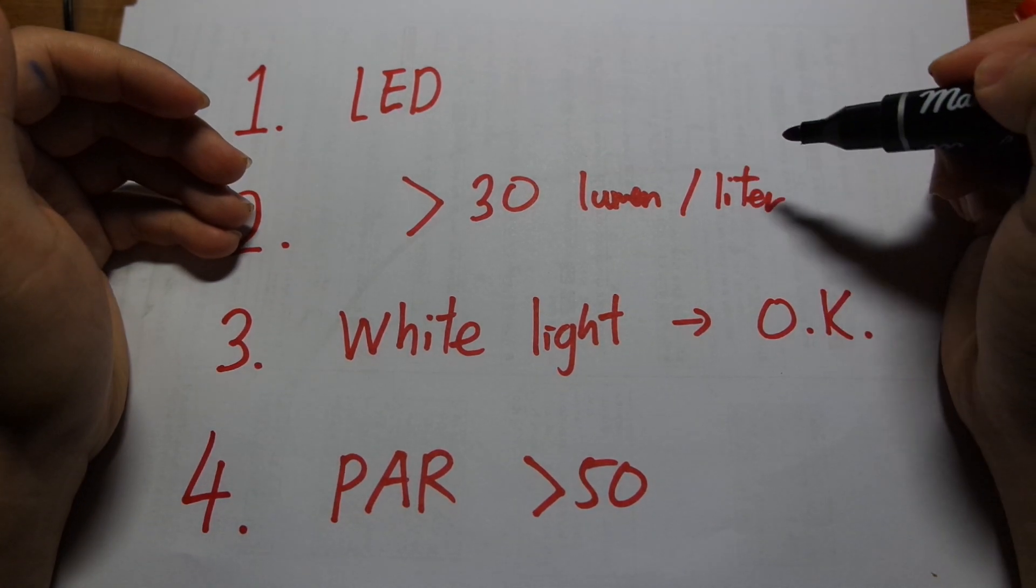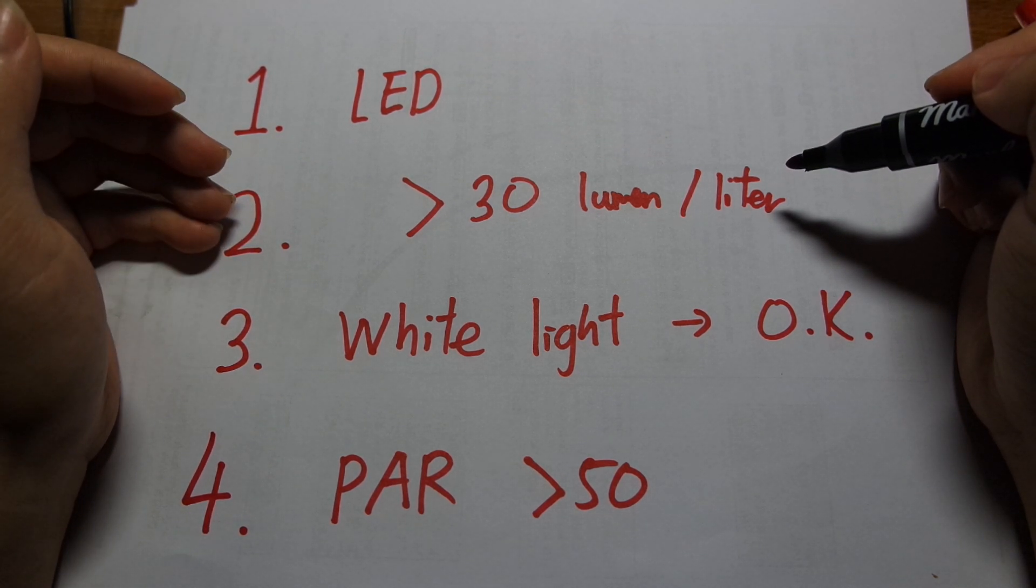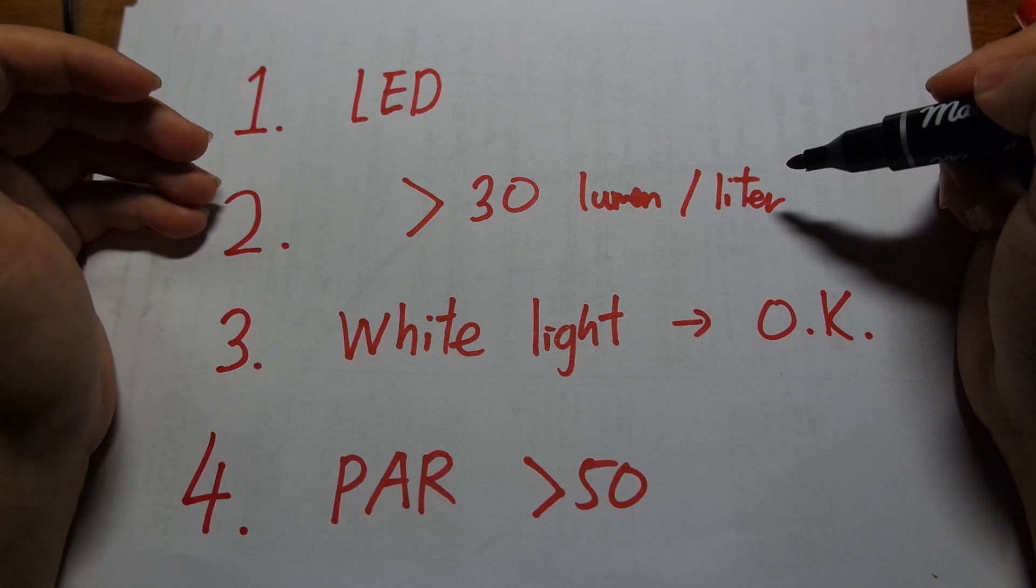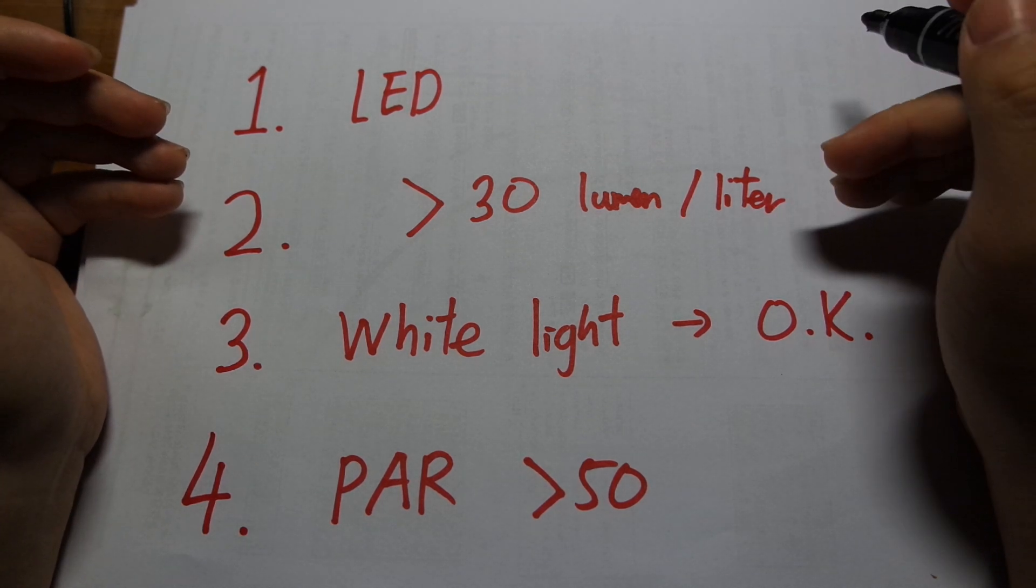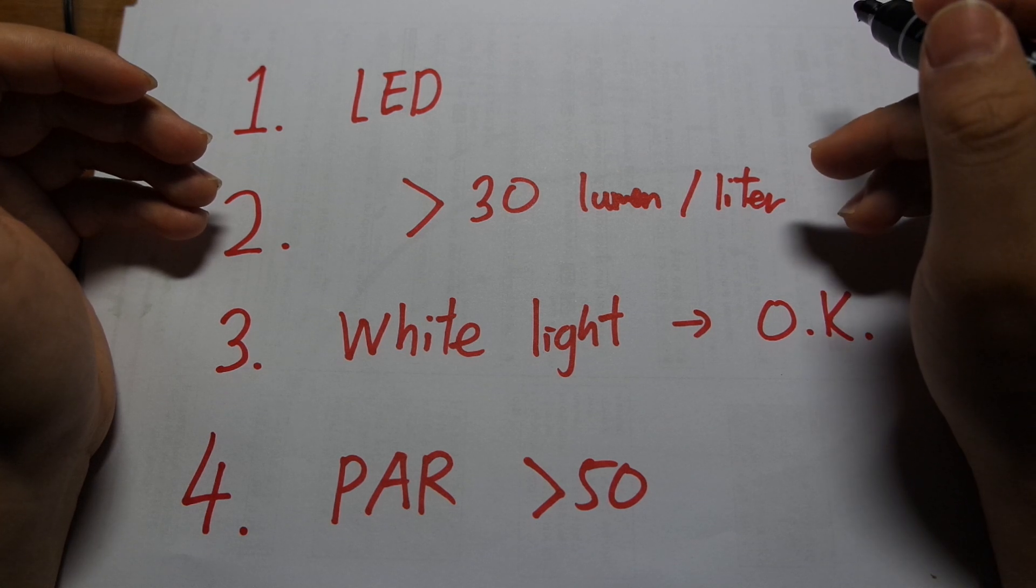Point two is that are 30 lumens per liter. It's an estimation that you can do. If you're not really obsessed about getting an optimal light and you just want to know what works, then maybe you can apply it. As long as you understand its limitations, you can go with 30 lumens per liter.